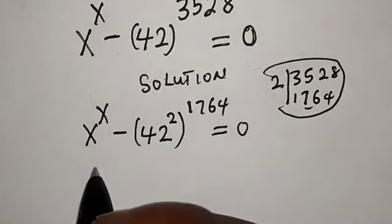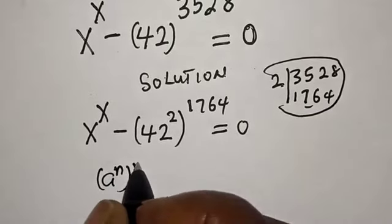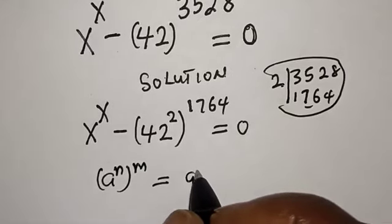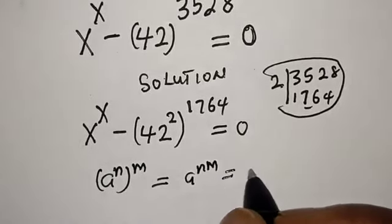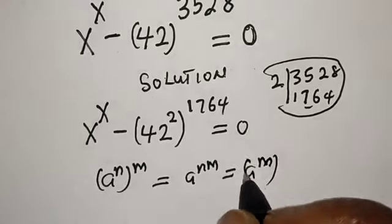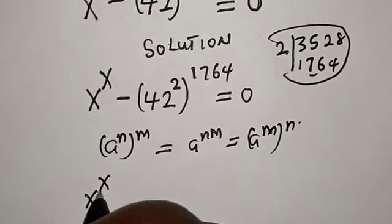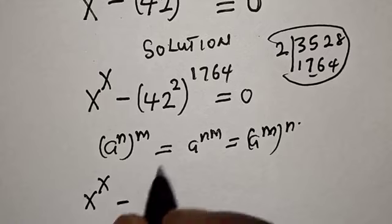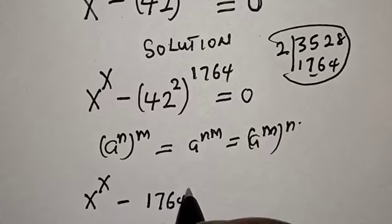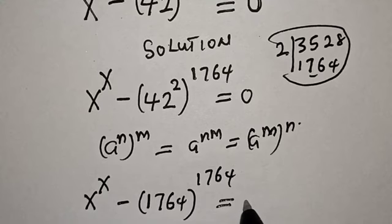Remember this rule: a^n raised to power m equals a^(nm). Then we have X^X minus 42 squared—that is 1764—raised to power 1764 equals 0.